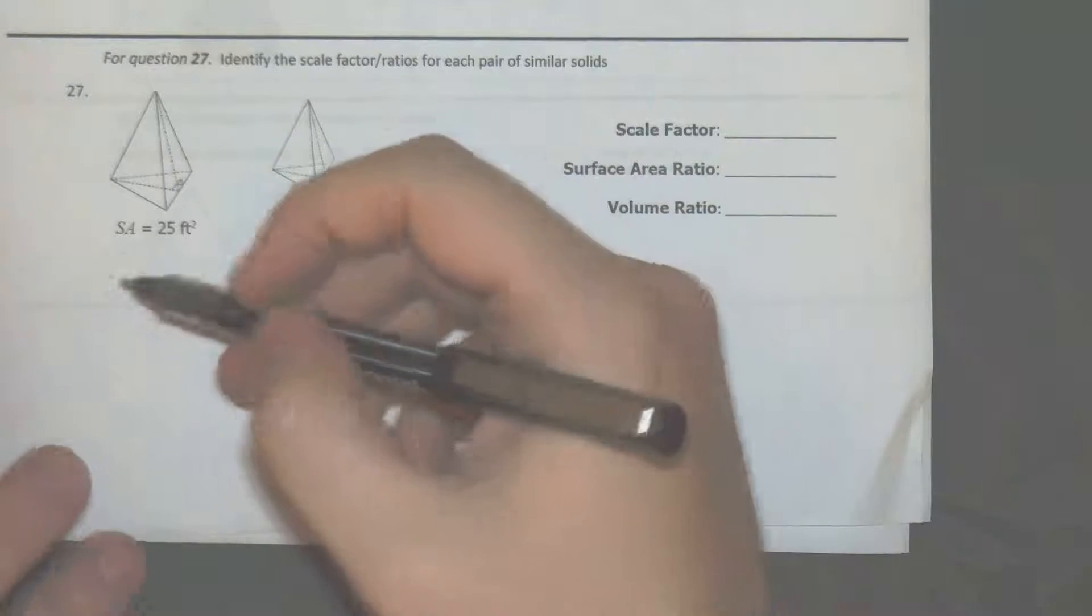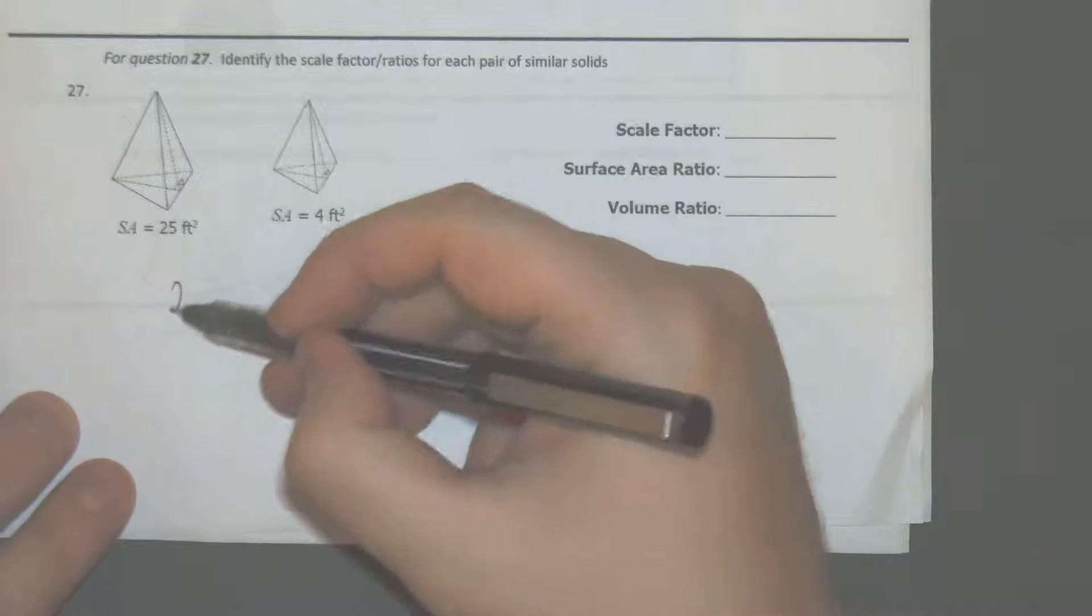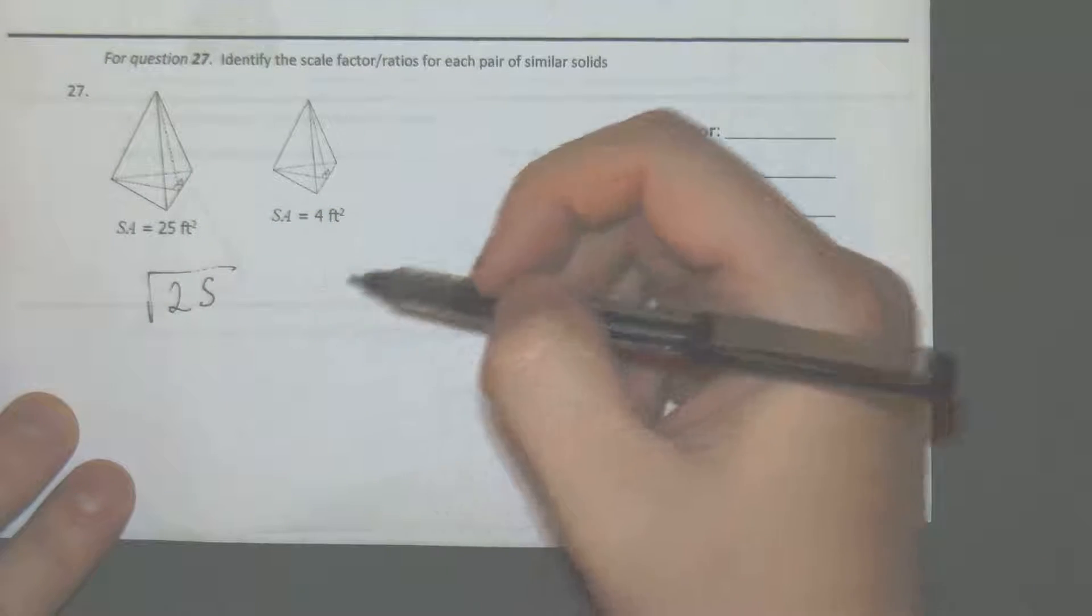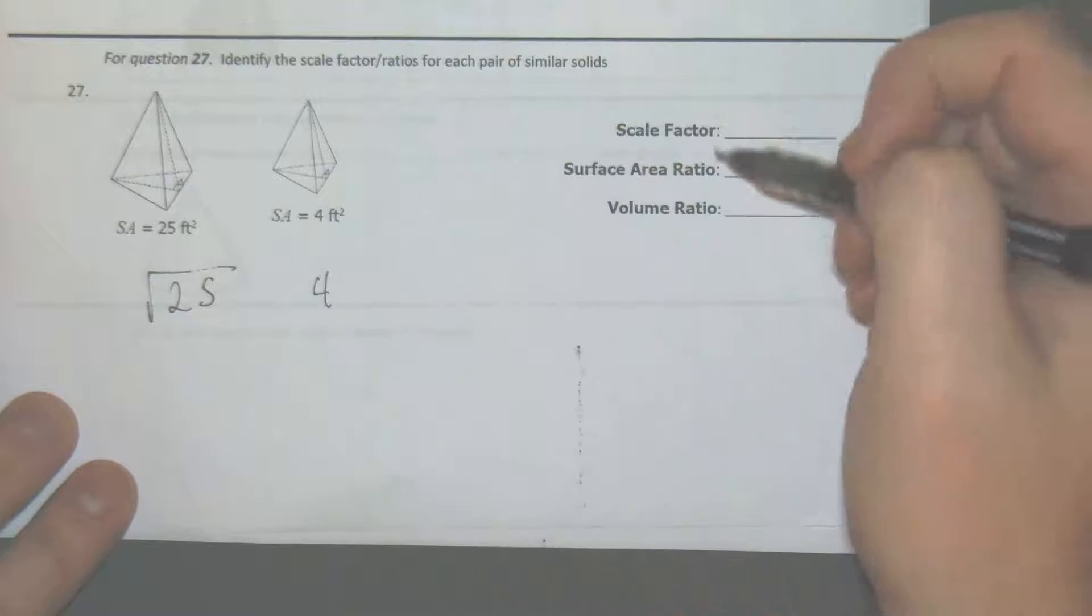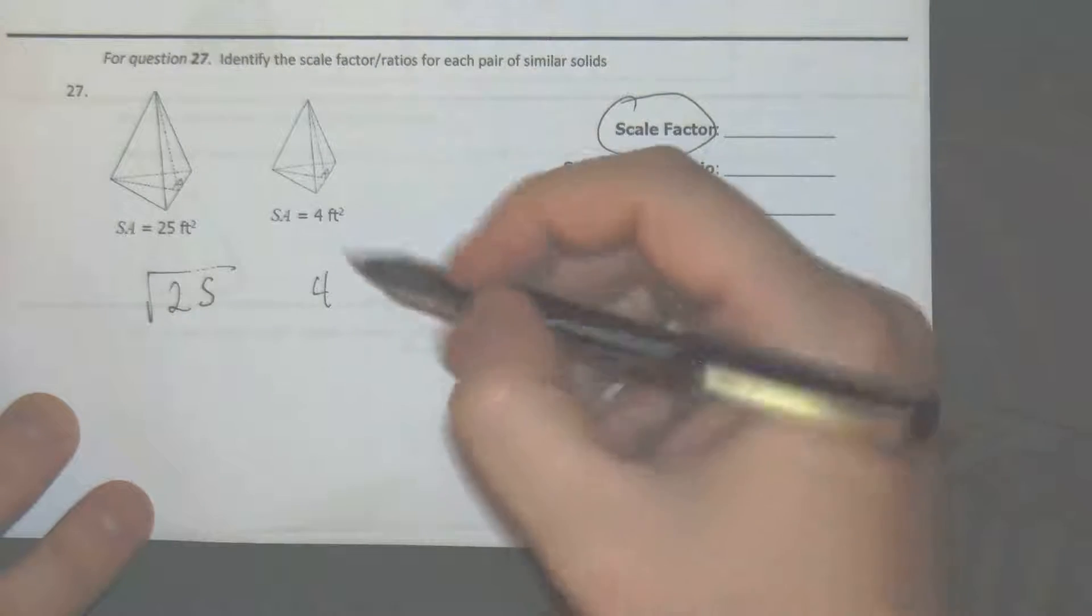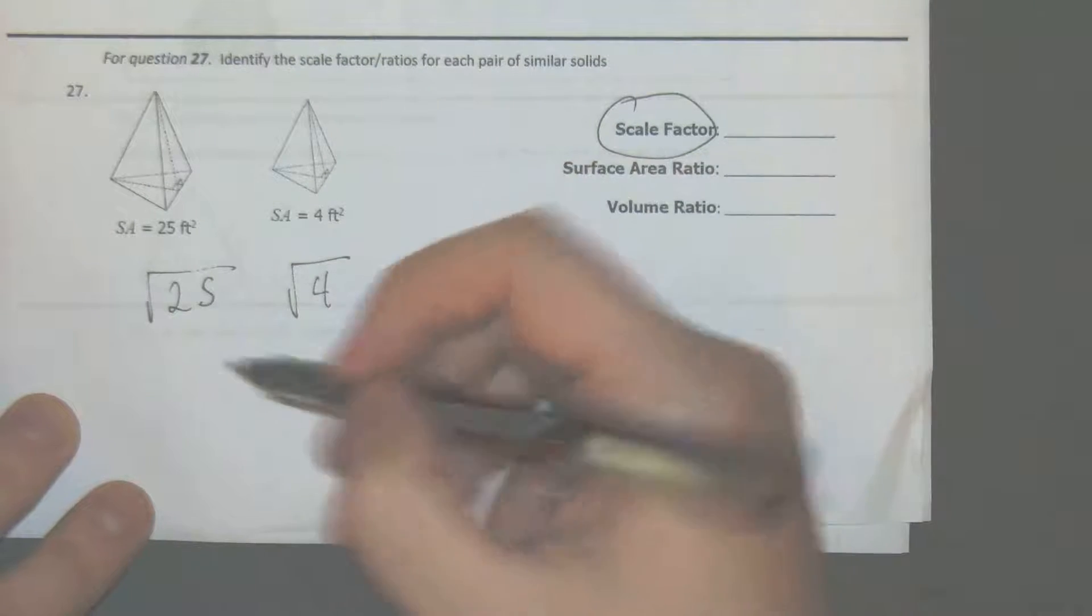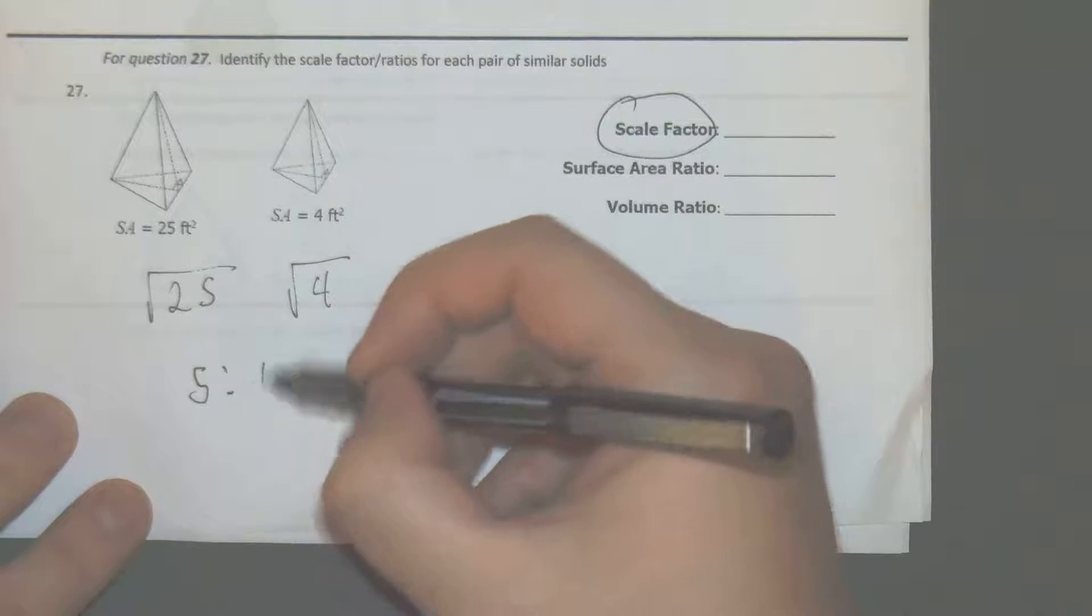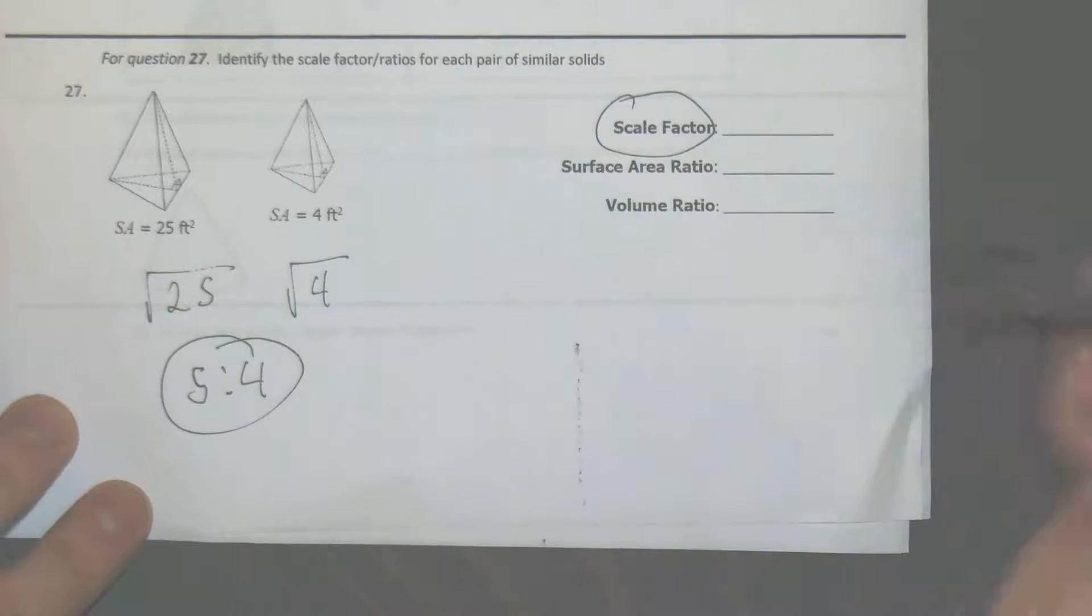So the first thing we would do is square root both of them to get this regular scale factor. So we get 5 to 4. That would be our scale factor.